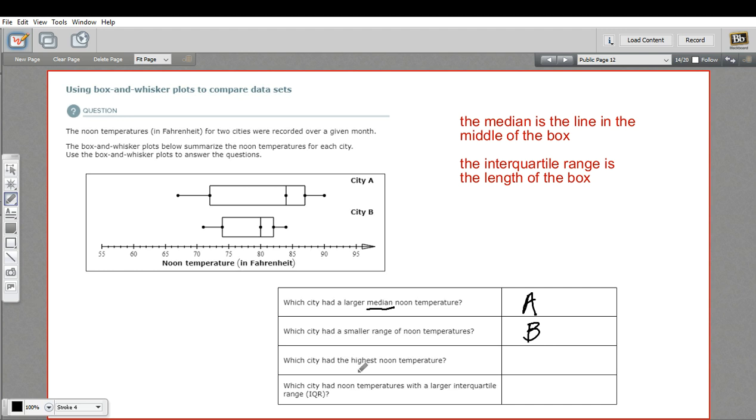All right. And the next one says, which city had the highest noon temperatures? You'd go out to find the highest point. And the highest point on city A is much higher here. City B only got up to 84. City A got up to 90. So that's A that's got the highest.